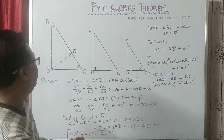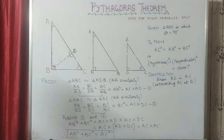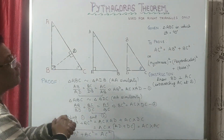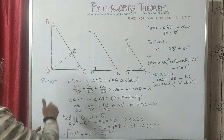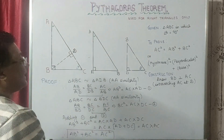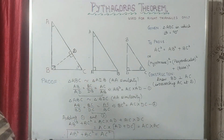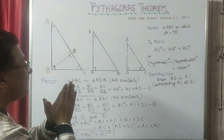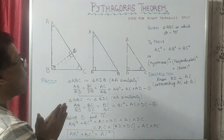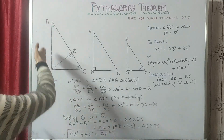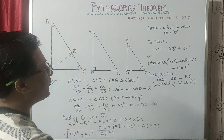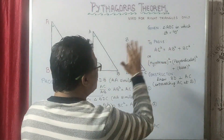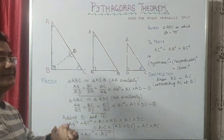We are given that there is a triangle ABC in which angle B is 90 degrees, and we have to prove that the hypotenuse squared — AC squared — is equal to perpendicular squared plus base squared. AB is the perpendicular and BC is the base, so we have to prove that AC squared is equal to AB squared plus BC squared.